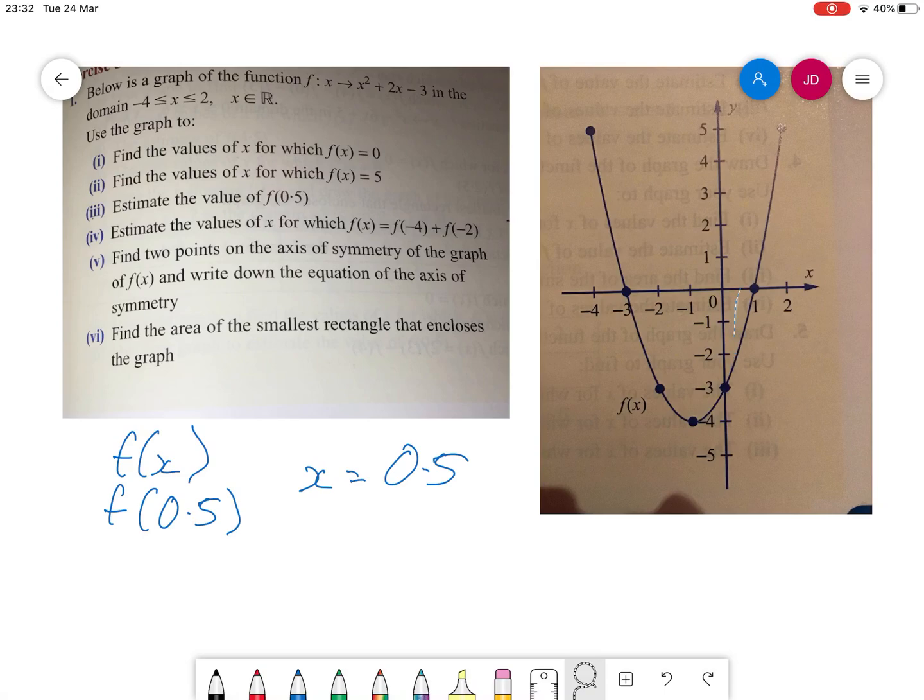So I go down and then across here, and I can see that my y-value at 0.5 is going to be -2. Therefore my answer is y = -2.